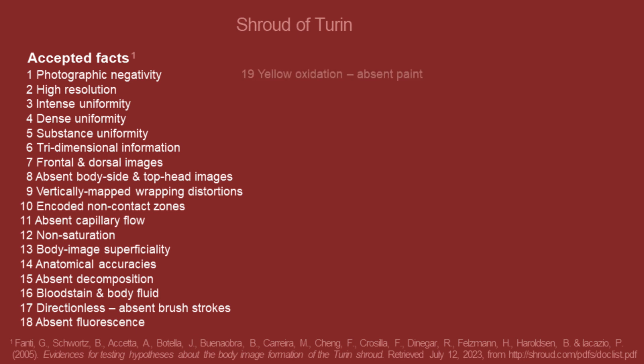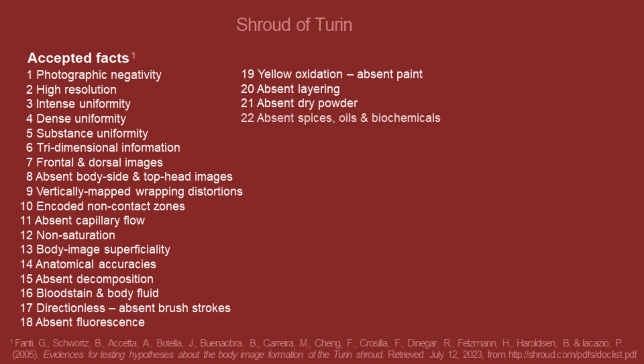Fluorescence is absent on the Shroud under ultraviolet illumination. Yellow oxidation is present, which means paint is absent. There is an absence of layering and an absence of dry powder on the Shroud. There is an absence of spices, oils, or biochemicals. There is an absence of photosensitizers or silver.